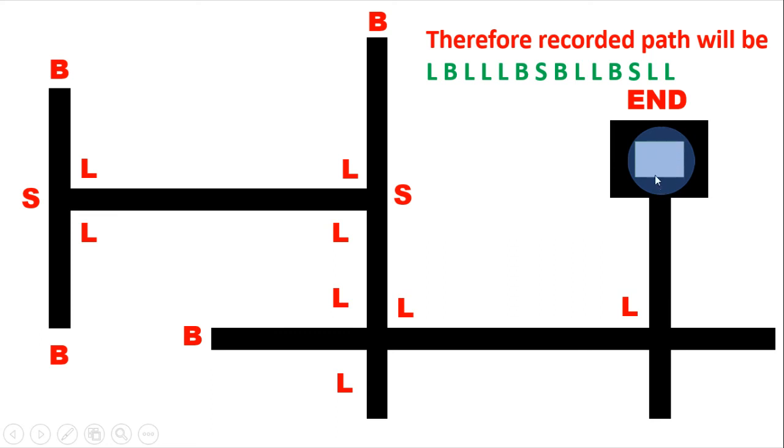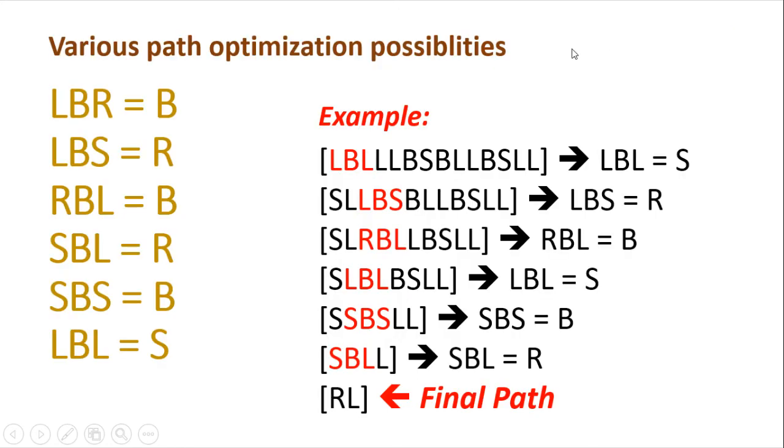So that's how we optimize a given left-hand wall following recorded path by replacing these patterns with these available eight path optimization techniques, and then finally we get this path. Now the things seem to be really good and simple whenever we are talking about the theory, but when we are about to program this in our microcontroller, then the things can be simplified definitely by distributing the task into multiple sub-processes.